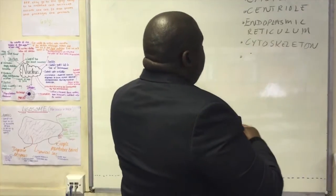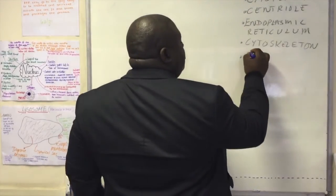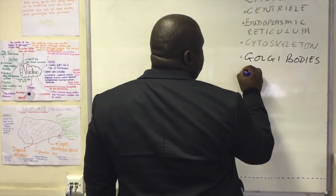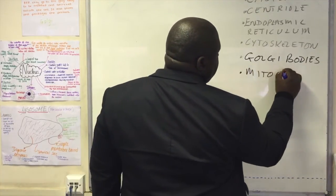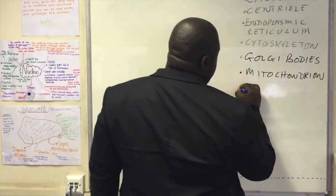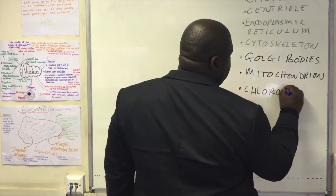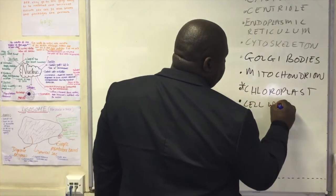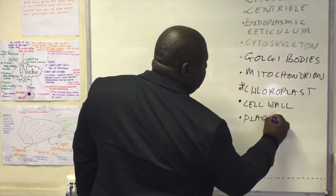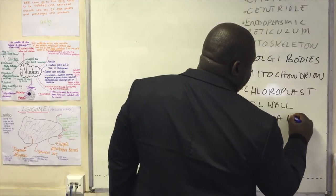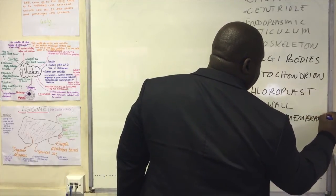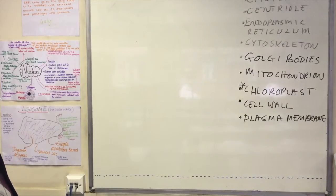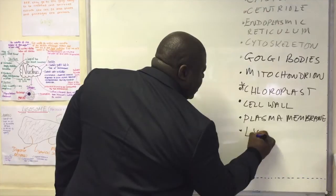We have the Golgi body, and we also have the mitochondria. We have chloroplasts — I'll put a star against that to show that these are in plants. Cell wall, and the plasma membrane. Remember, in biology we don't say cell membrane; we say plasma membrane or cell surface membrane. And those are the main organelles we need to get used to. Maybe we'll add the lysosomes as well.